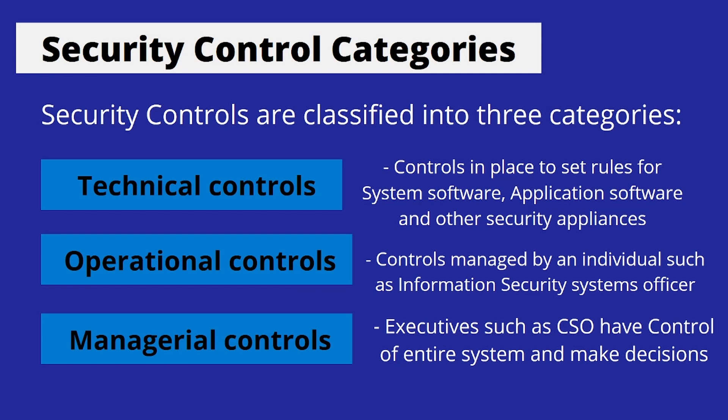Technical controls are the controls in place to set rules for system software, application software, and other security appliances. Operational controls are managed by an individual such as an information security systems officer. In managerial controls, executives such as the chief security officer have control over an entire system in order to make decisions impacting the security controls.